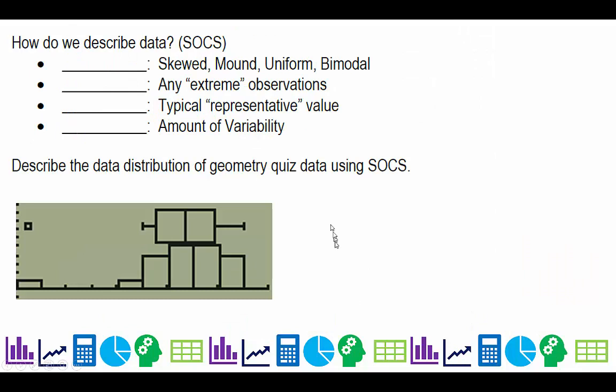So how do we describe data? Well, you want to remember this acronym, which is called SOCS. Shape is for S, and that means tell if it's skewed, mound, uniform, or bimodal. Look for any outliers, any extreme observations. Where is the center, which is your typical representative value, and the spread, or amount of variability.